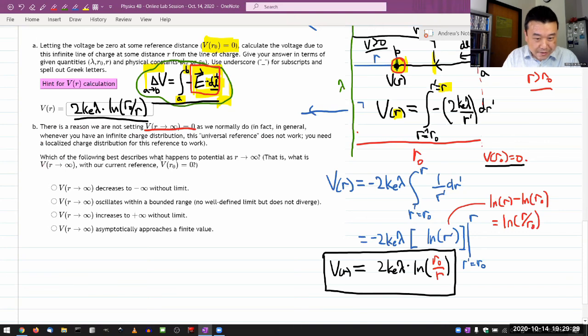which of the following best describes what happens to potential as R equals to infinity. So we are considering here as R, you know. So first, as it crosses this point, my potential now becomes negative. So as R continues to increase without limit, what happens is that this ratio will go to zero. So we are looking at natural log of zero.